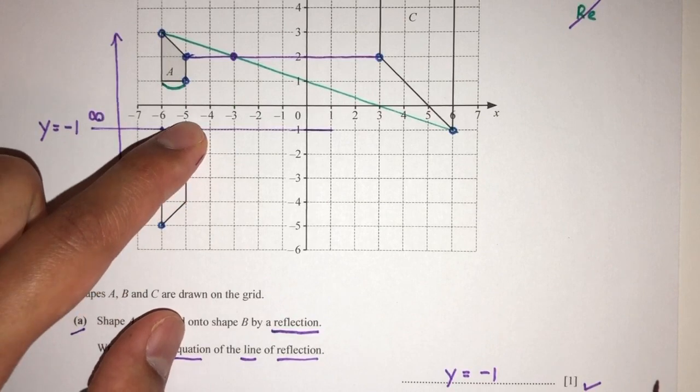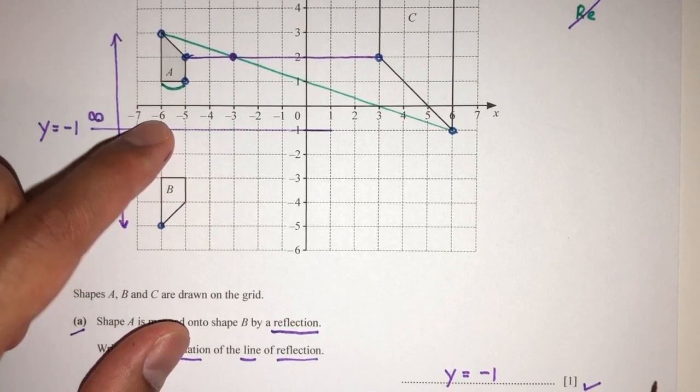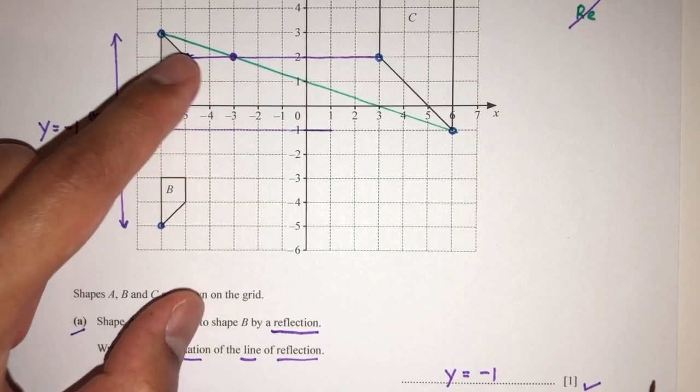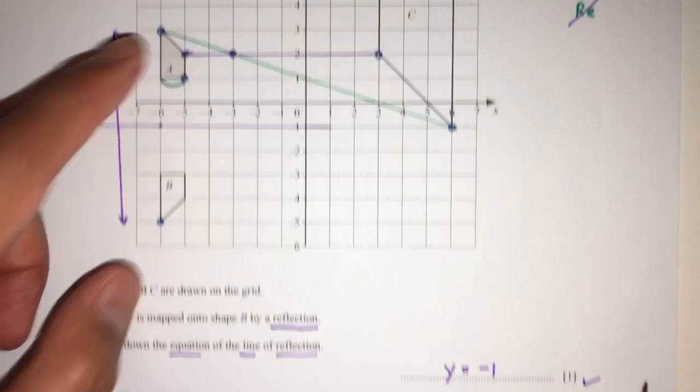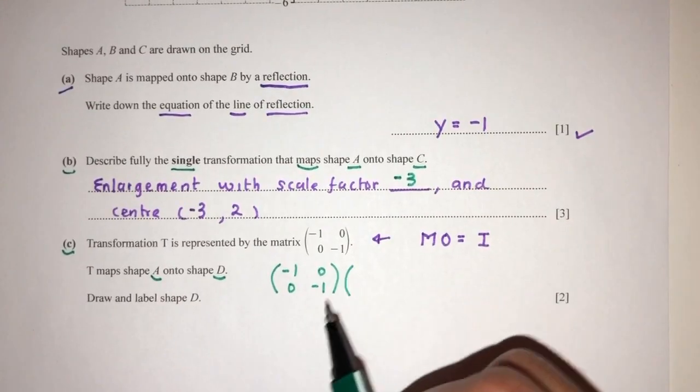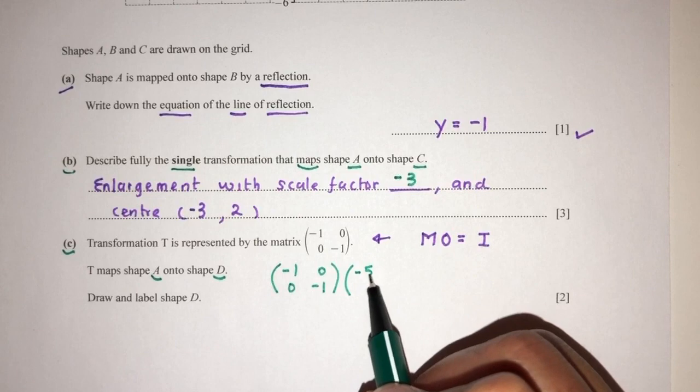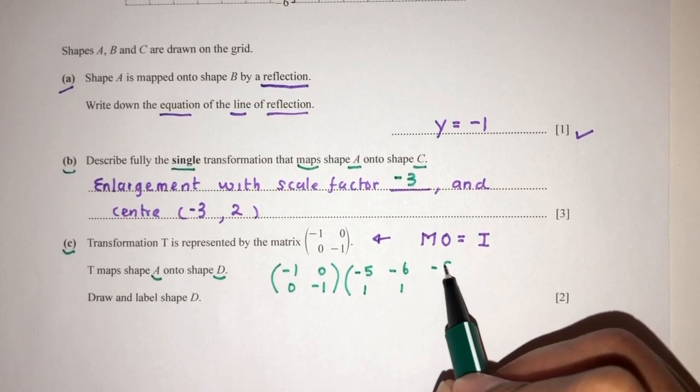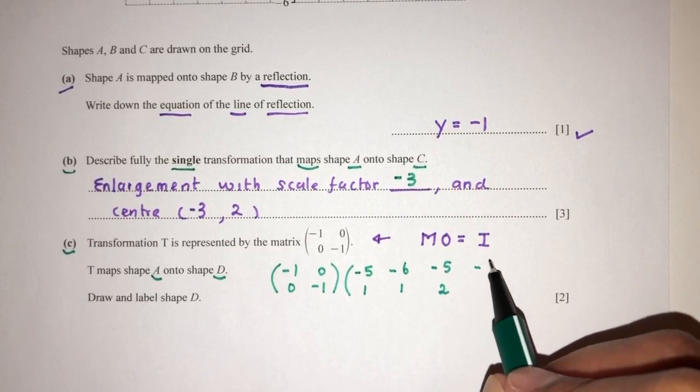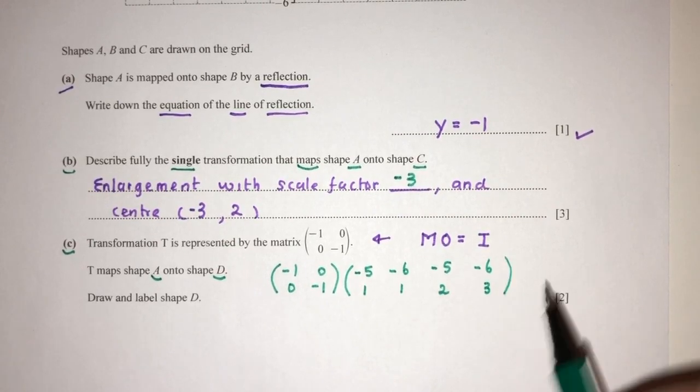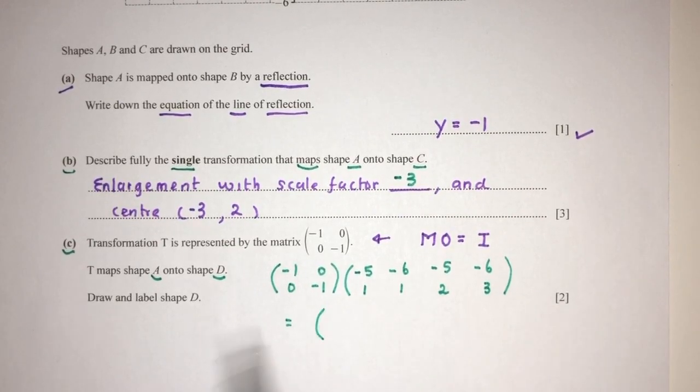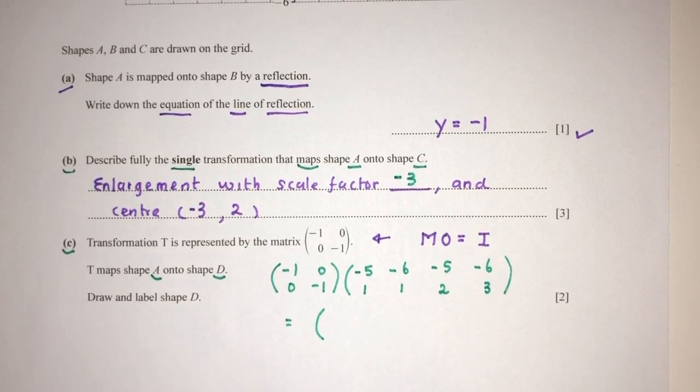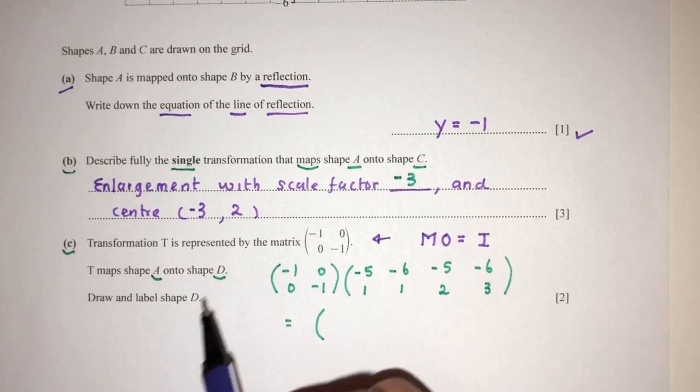Let's write down the points of A again. Very easy: (-5, 1), (-6, 1), (-5, 2), (-6, 3). Let's write this down - these are the points of shape A: (-5, 1), (-6, 1), (-5, 2), and (-6, 3). Let's find the corresponding or resulting points for your shape D. This is A, we have to find shape D.